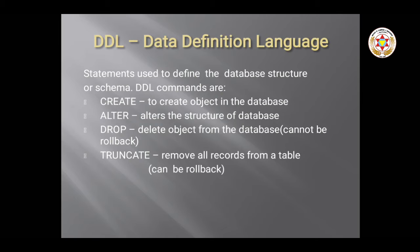DROP cannot be rolled back — once you make the changes, you cannot roll back. The DROP command removes the entire structure of the table. TRUNCATE is used to remove all records from a table. For example, if your table has 50 records and you run the TRUNCATE command, all 50 records will be deleted, but the table structure will still remain.